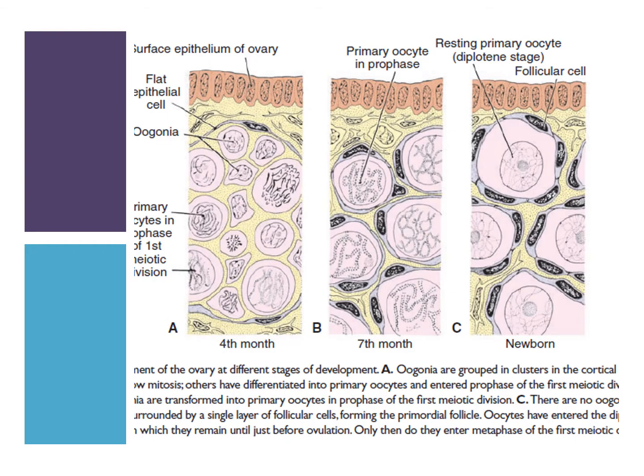Figure A shows the fourth month of prenatal development. The oogonium has divided to form several oogonia, forming clusters of cells surrounded by a single layer of flattened epithelial cells from the surface epithelium of the ovary, called follicular cells. Some oogonia also develop to form primary oocytes arrested in prophase I of meiosis. By the fifth month, the total number of germ cells would have reached its maximum of 7 million.